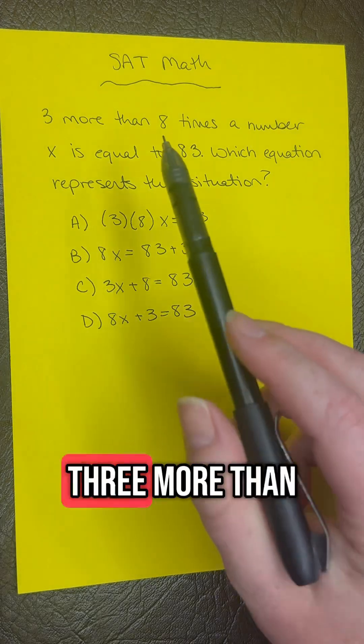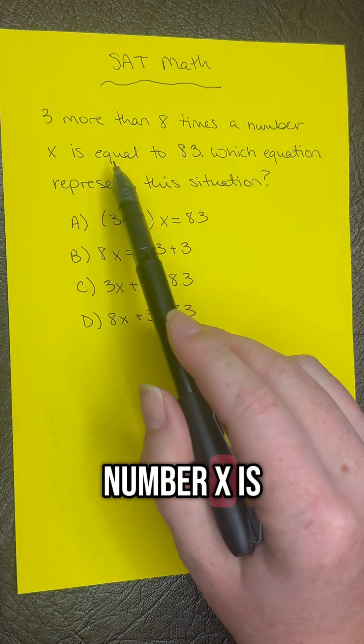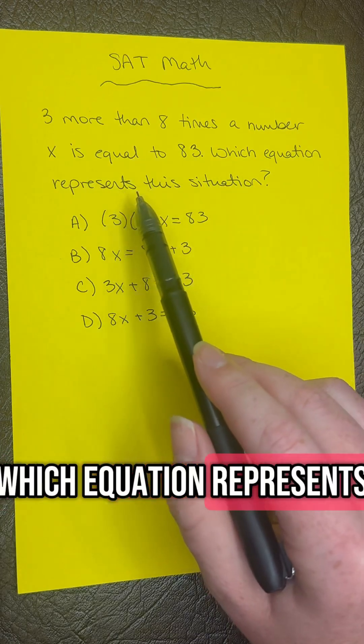SAT math question of the day. Three more than eight times the number x is equal to 83. Which equation represents this situation?